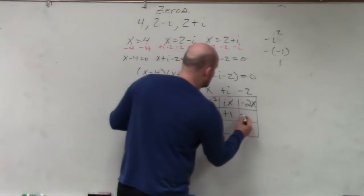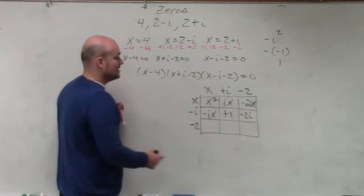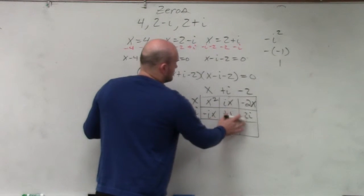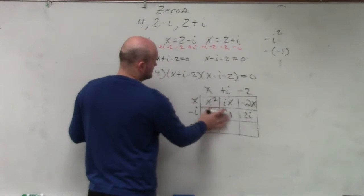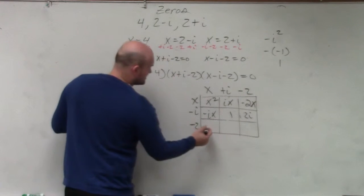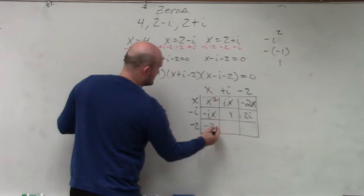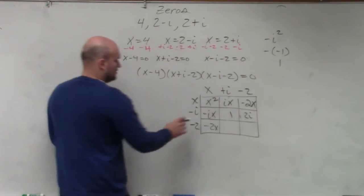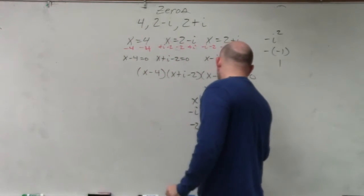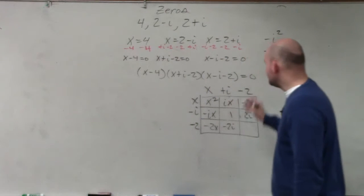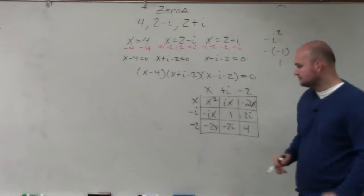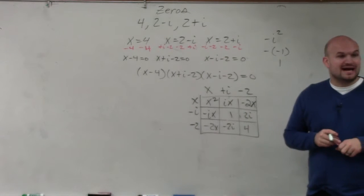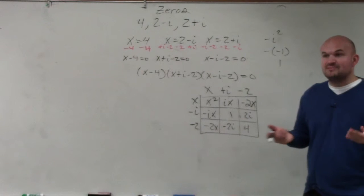Negative i times negative 2 is positive 2i. I'll just write that as 1. Negative 2 times x is negative 2x. Negative 2 times i is negative 2i. And negative 2 times negative 2 is a positive 4.